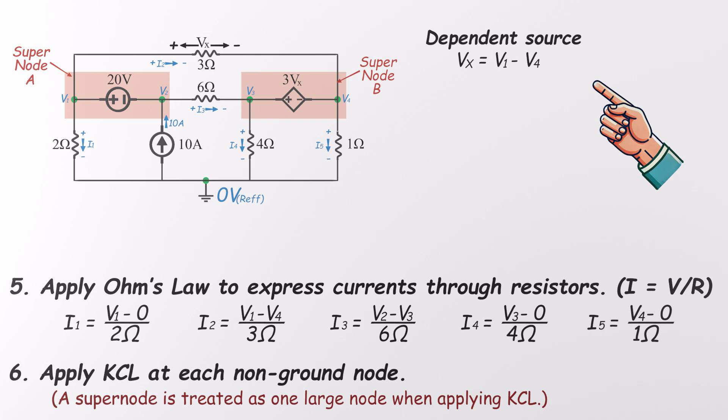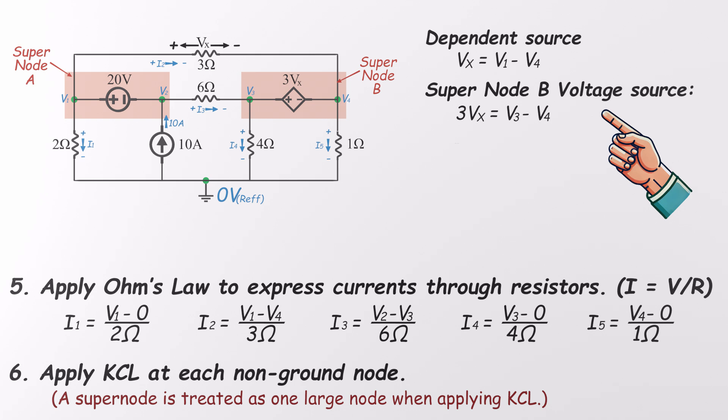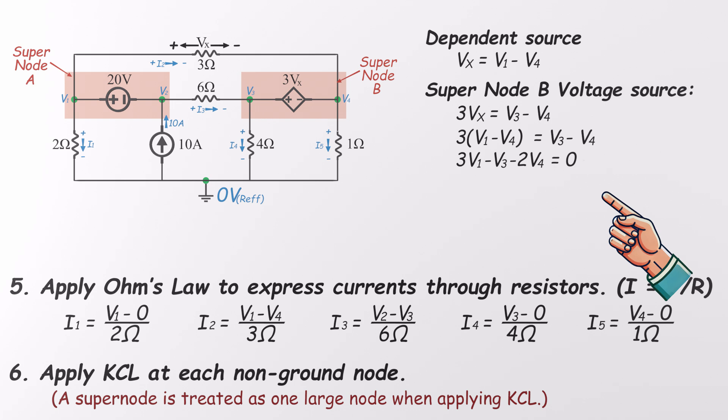Here's where the supernode helps again. Since the dependent voltage source connects V3 and V4, we can write V3 minus V4 equals 3 times Vx. And since Vx is V1 minus V4, that becomes 3 times V1 minus V3 minus 2 times V4 equals 0. That gives us our third equation.